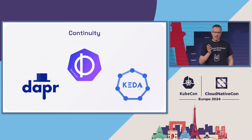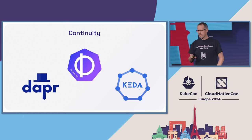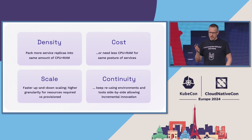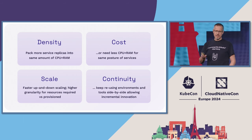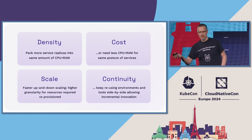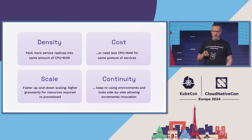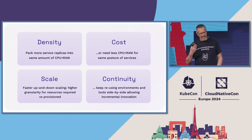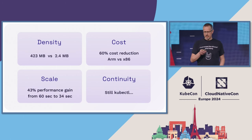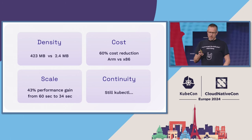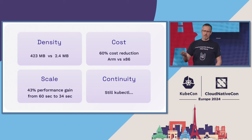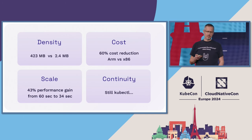We can use the same resources multiple times within such a process, while still applying all the tools and environments we already know. To conclude: the smaller packaging size allows us to pack more services into the same resources, or use cheaper resources to process the same portfolio of services. We can scale up and down faster and achieve a higher grade of resource reusability. In numbers, just switching from x86 to ARM, we could use 60% cheaper resources for that.